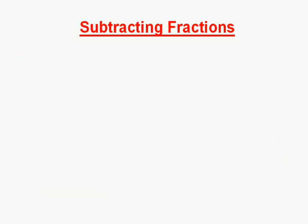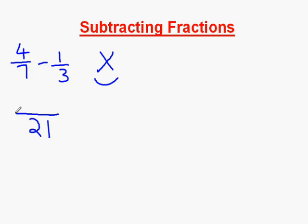Now we will be moving on to subtracting fractions. We start off with 4 sevenths take away 1 third. We use the same method of cross multiplying to get the same denominators, which gives us 21 as the denominator. And 3 times 4 take away 7 times 1, which leaves us with 5 over 21.